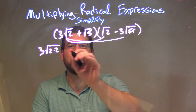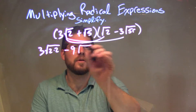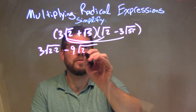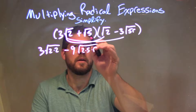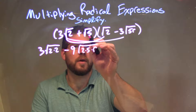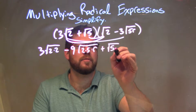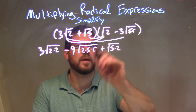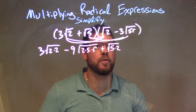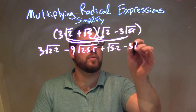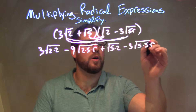3 times minus 3 is minus 9, and then the square roots combined into one big square root gives us 2 times 5 times r. Next part: square root of 5 times the square root of 2 is plus square root of 5 times 2. And then lastly, square root of 5 times minus 3 square root of 5r — this is minus 3 square root of 5 times 5 times r.